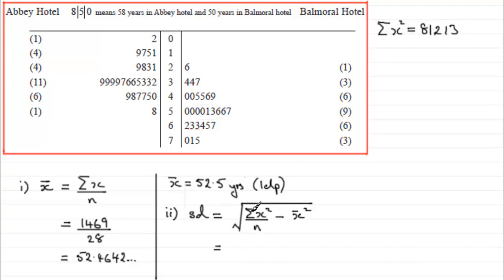And it's just a question of substituting our values in. So this is going to be equal to the square root of, well, sigma x squared—we've got it up here, we're given that value, 81213—divided by how many values we've got, 28.